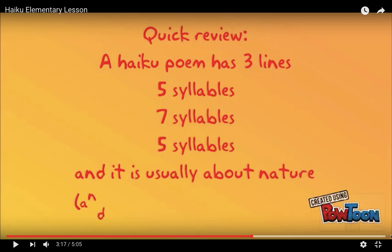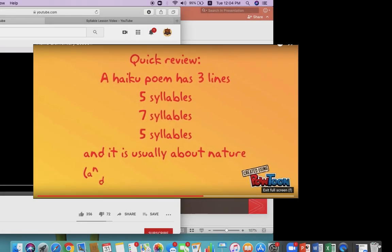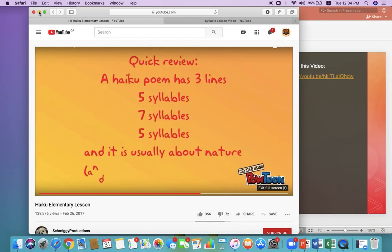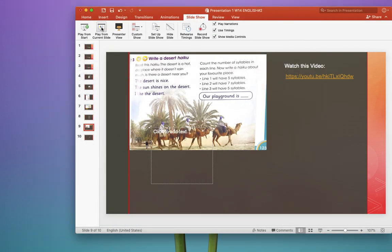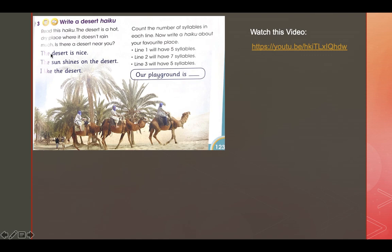Now let's go back — you can watch the rest of the video at home. Let's go back to our book. For example: 'The sun shines on the desert' — one, two, three, four, five, six, seven syllables, because desert has two syllables. Then 'I like the desert' — five syllables, because desert has two syllables.